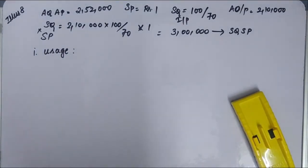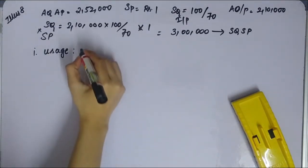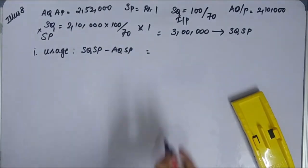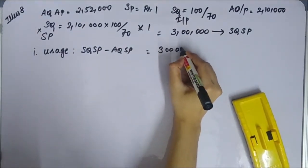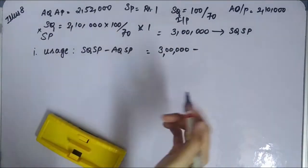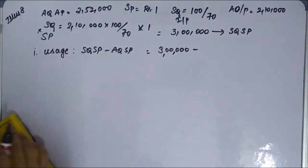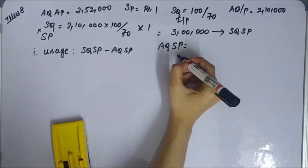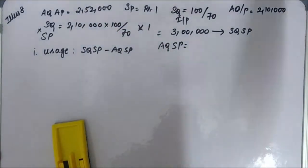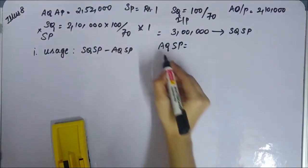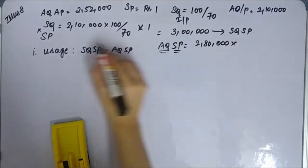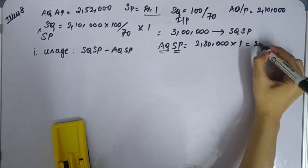Next, price variance. For usage variance, formula is SQSP minus AQSP. SQSP is 3,00,000. AQSP: actual quantity material used is 2,80,000 into standard price 1, gives me 2,80,000.